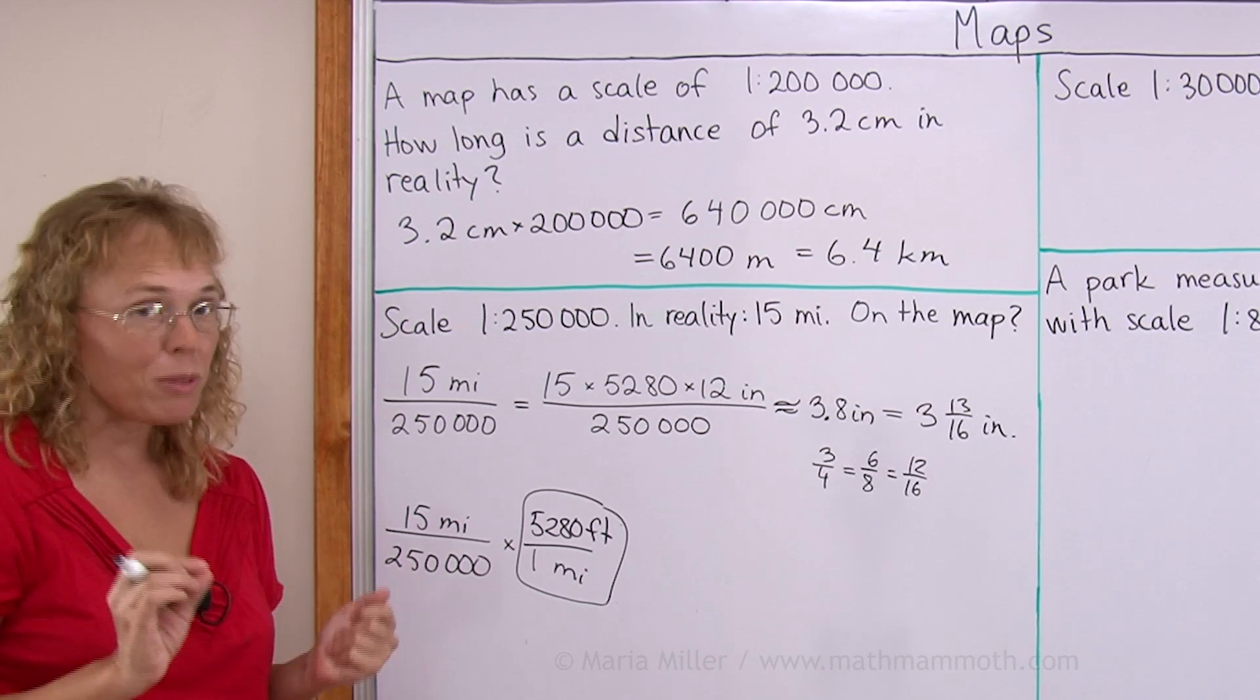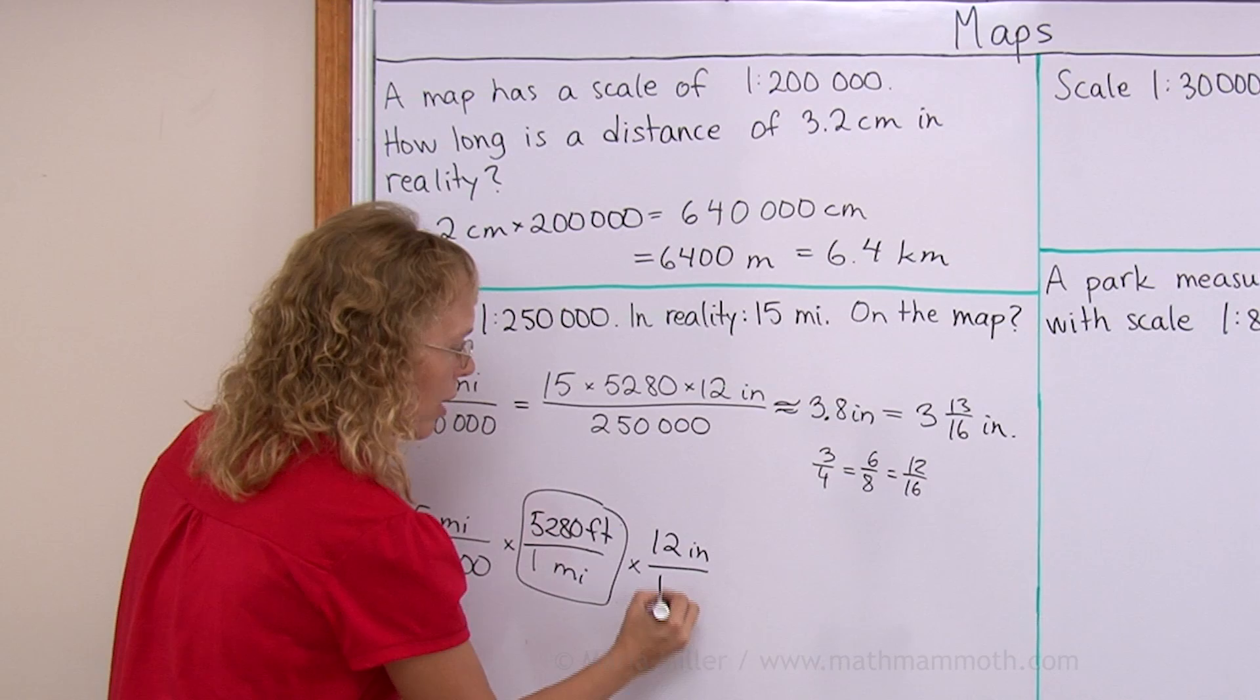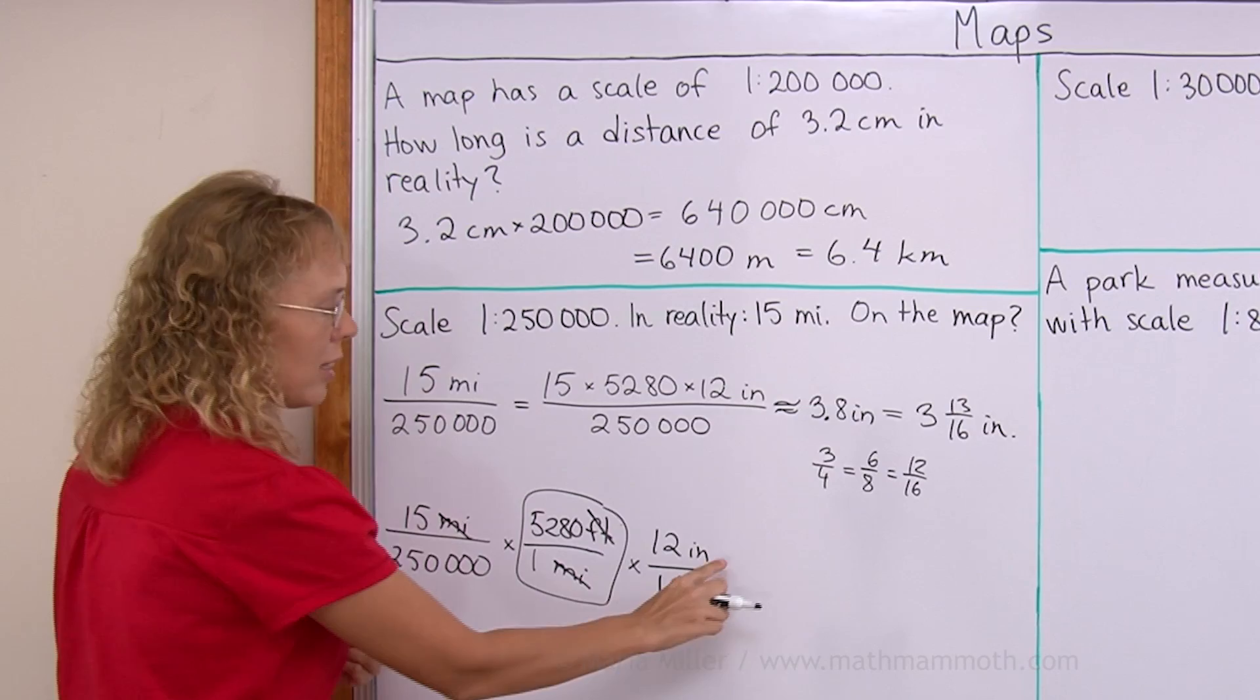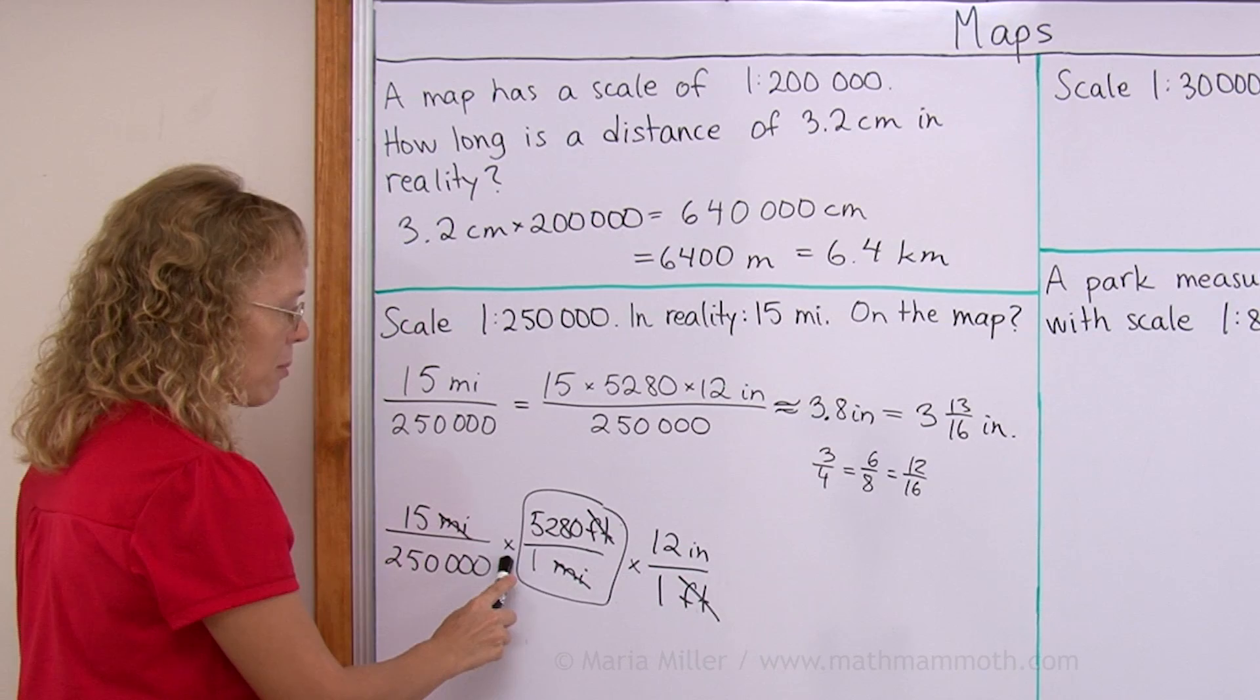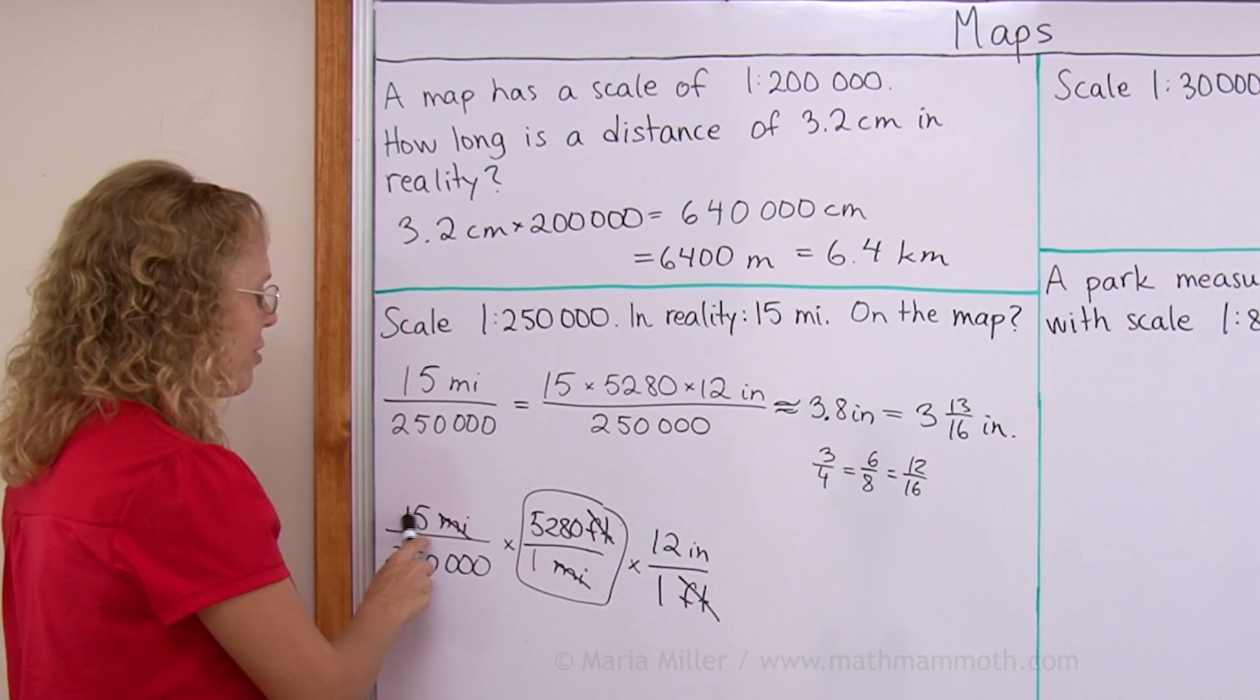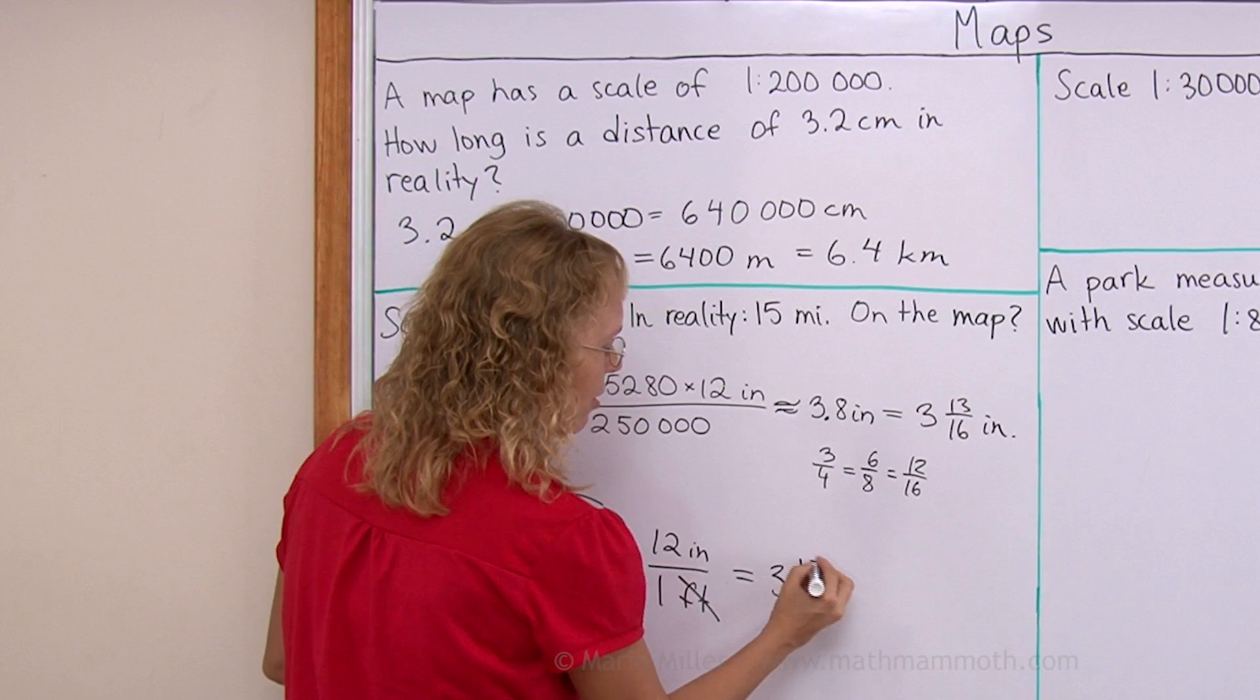And then the same thing with the 12 inches to 1 foot. 12 inches here, 1 foot here. So that these feet will cancel. And here the miles will cancel. And my units will be in inches. And now, I have written this out and then I will use the calculator. So I can go 15 divided by 250,000. Then I go times 5,280 times 12. Or you can alternatively go 15 times 5,280 times 12 divided by 250,000. Like we did here. Either way, you get the same. So this will eventually be the same. 3 and 13 sixteenths of an inch.